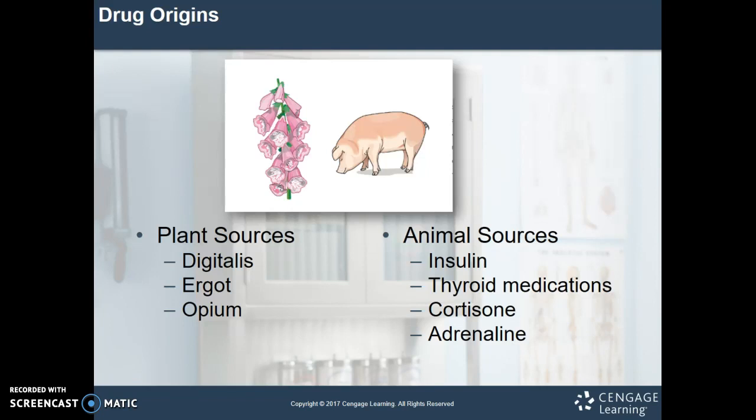Some of the first drug sources were from plants, fruits, and vegetables. Further research revealed that certain extracts from animals were useful in alleviating patient symptoms or replacing missing chemicals. Specifically — take a look at the piggy on the screen — pigs were our original source of insulin and thyroid medications. These days we use more biochemical engineering to create those, which leads to less sensitivity and fewer reactions, but the pig was the original source.